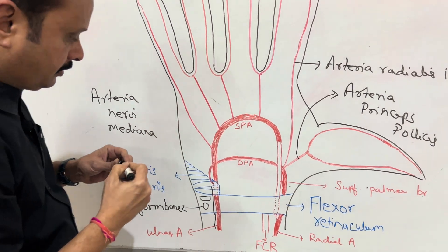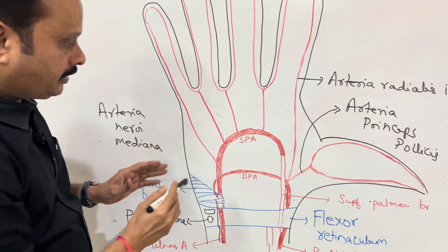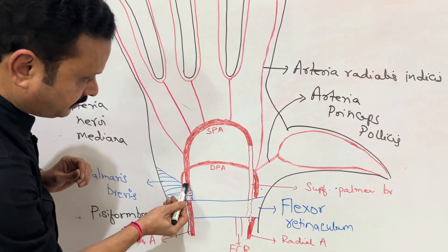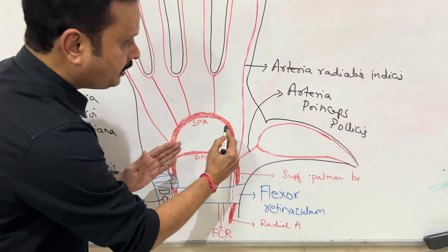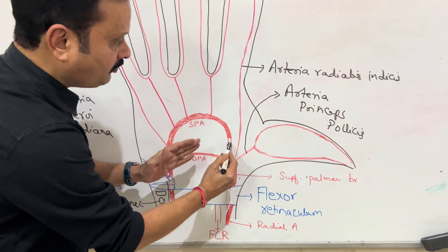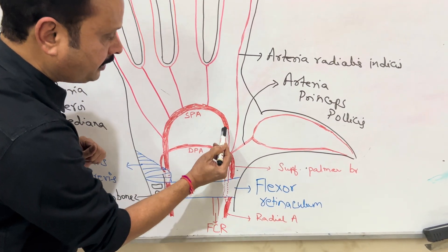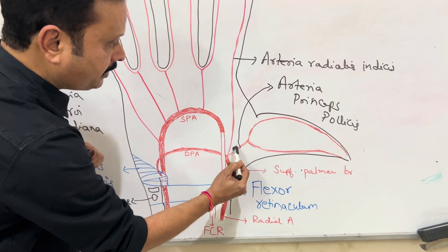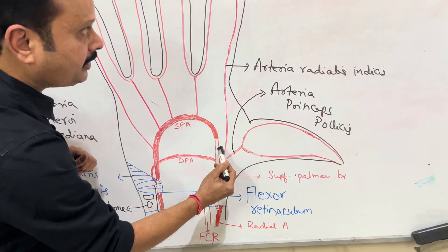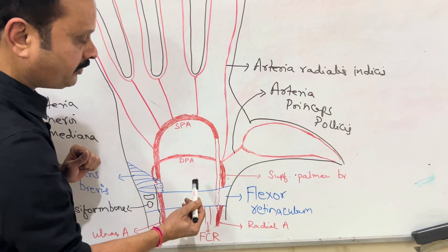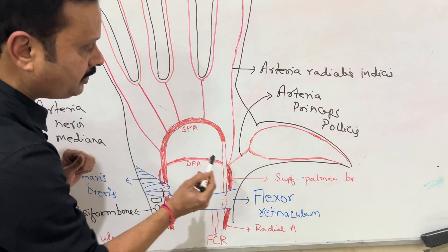To repeat: the superficial palmar arch is formed mainly by the superficial branch of the ulnar artery, and on the lateral side it is completed either by the superficial palmar branch of the radial artery, by the arteria princeps pollicis of the radial artery, by the arteria radialis indicis of the radial artery, or by the arteria nervae mediana.